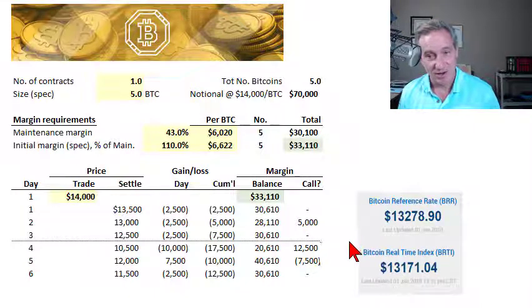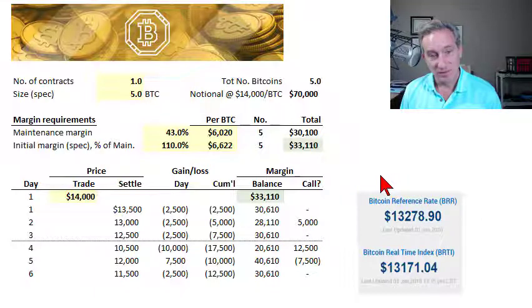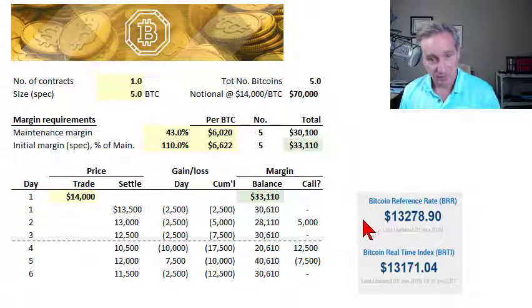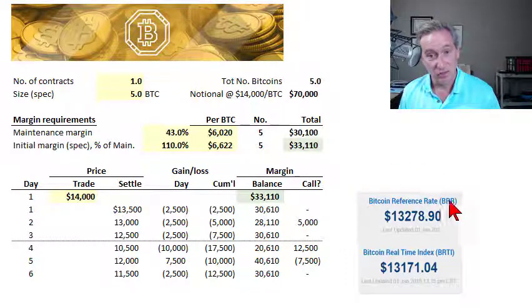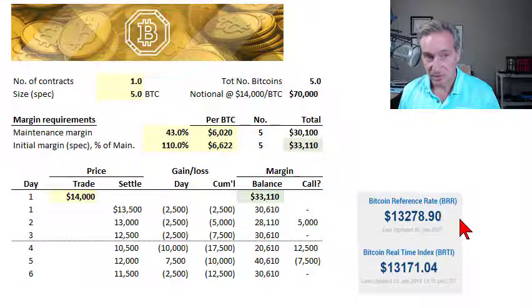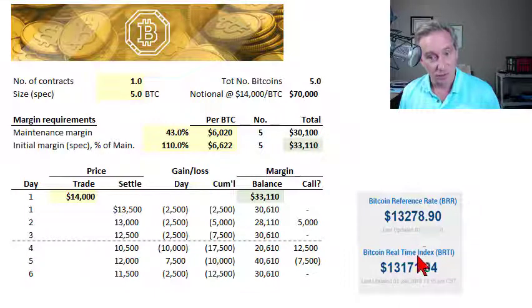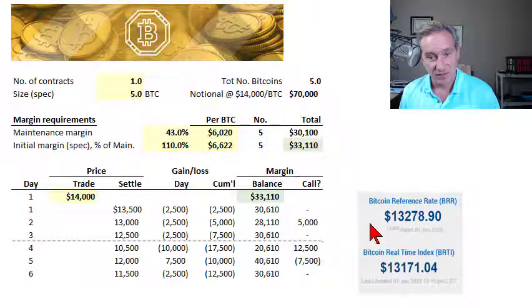A related question is what Bitcoin price the CME uses, since not only is Bitcoin volatile but there are different prices at different spot exchanges simultaneously. Per the contract, CME uses what they call a Bitcoin Reference Rate — similar to an index like LIBOR — taking a complex weighted average of spot rates flowing through major Bitcoin exchanges. This is a once-a-day average of spot rates, and they also have a real-time index monitored on an ongoing basis.